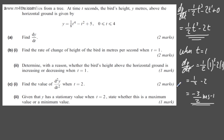So in the second question now, part one asks us to find that value, and it's minus 3 over 2 meters per second. In the second part, it says determine with a reason whether the bird's height above the horizontal ground is increasing or decreasing when t is equal to 1. We can say now that dy/dt is less than 0, therefore it's decreasing. So I'm going to write it's decreasing as dy/dt is less than 0.